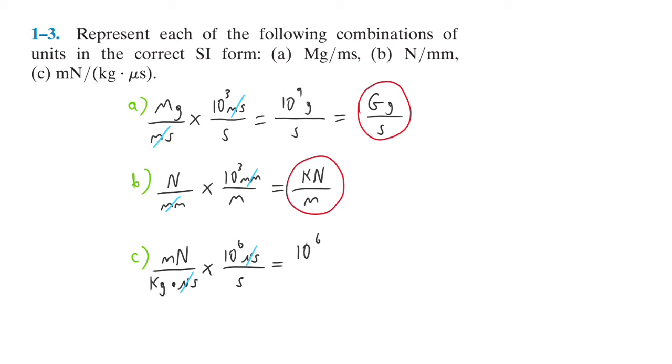And that leaves us with 10 to the 6 times million, which is also 10 to the 3rd Newtons over kilogram times second. So that's going to be 10 to the 3rd Newtons, which is the same thing as kilonewton over kilogram times second. That's the last one.